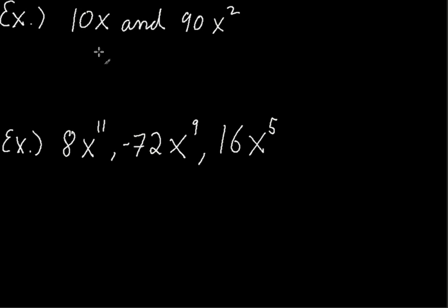A simple example might be to find the greatest common factor between 10x and 90x squared. What is the greatest common factor between 10 and 90? Well, 10 is a factor of 90, because 9 times 10 is 90. So we could say that 10 out of 10 and 90, 10 is the greatest common factor.